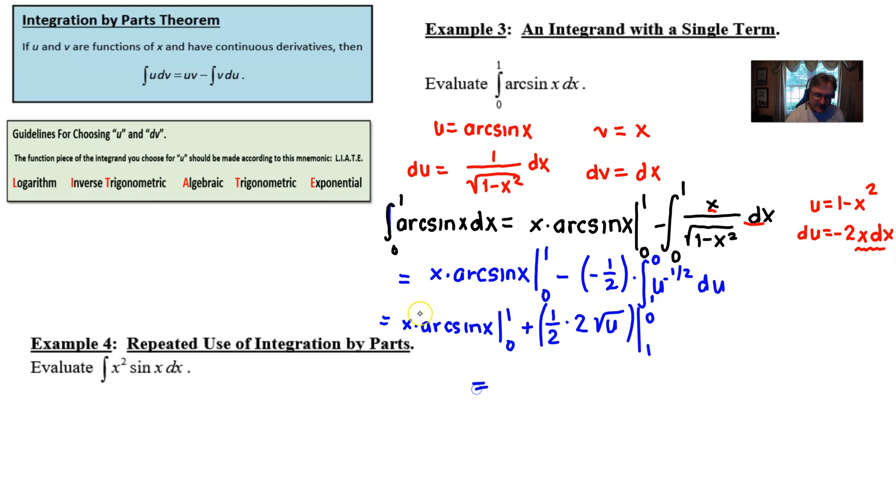All right I think we are finally ready to plug and chug so if we let x be 1 I'm going to be looking at the arc sine of 1 minus if I plug 0 in everything disappears I don't need to worry about anything there we get minus 0 and then I'm going to add to that if I take this expression where the 2s cancel and I plug 0 in for the u the square root of 0 is of course 0 and then I'll subtract plug in 1 for my u the square root of 1 of course is 1 and so really I have arc sine of 1 minus 1.